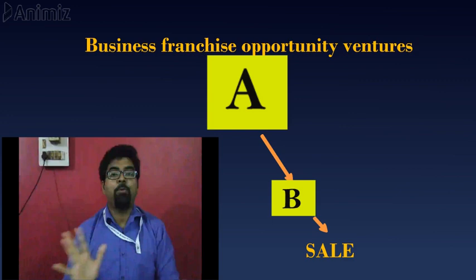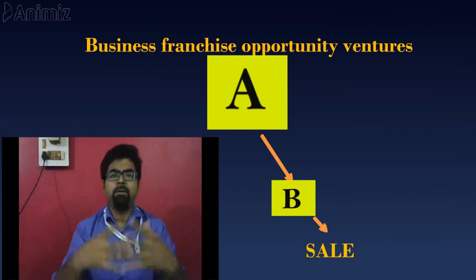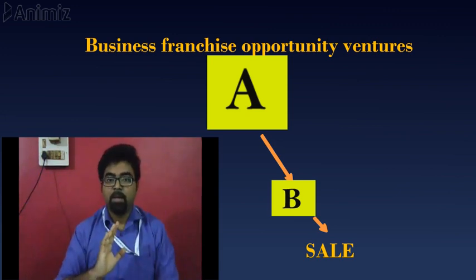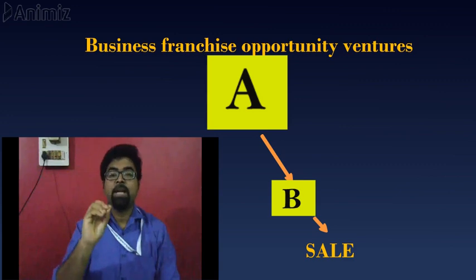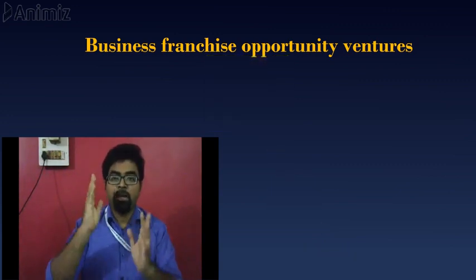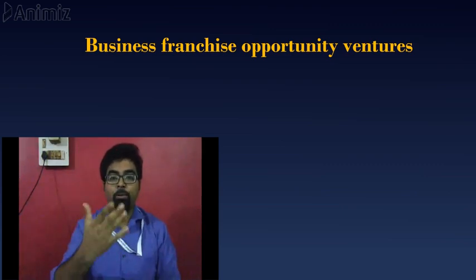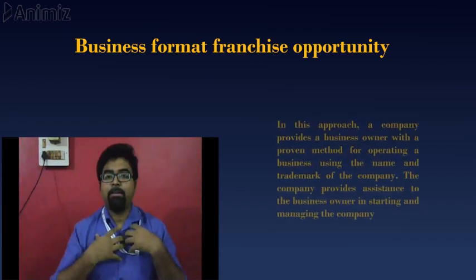Number three is the business franchise opportunity venture. Here I allow you to sell my product, but you are a person who will buy only my product — not other companies' products. For example, if I deal with machines like tea-making or coffee-making machines, you will do business only with my product. You are the sole buyer of my product. If you also buy other companies' products, it does not qualify as a business franchise opportunity venture.